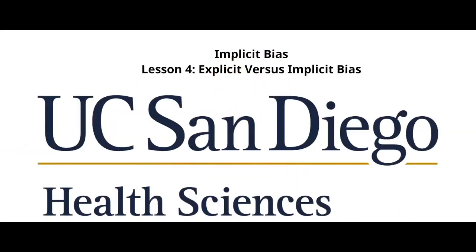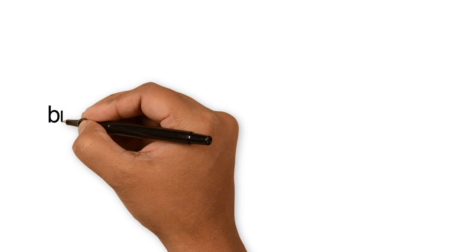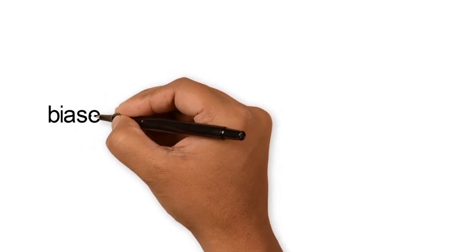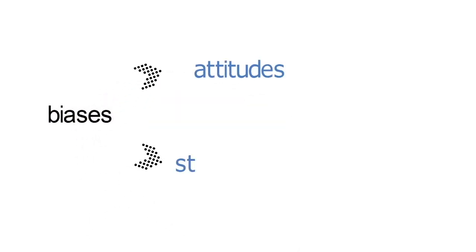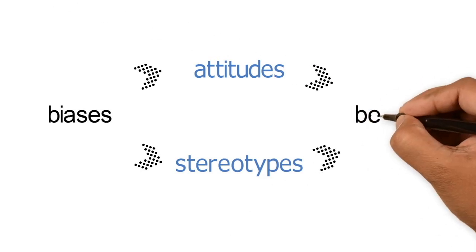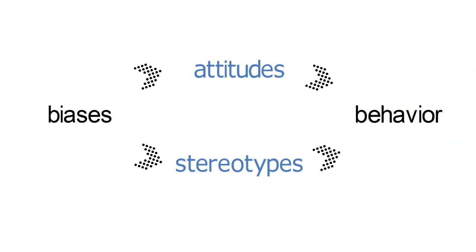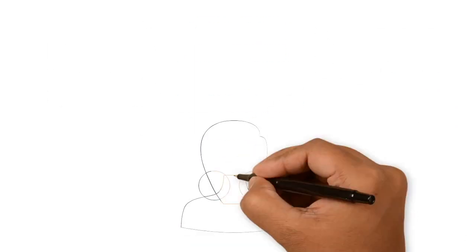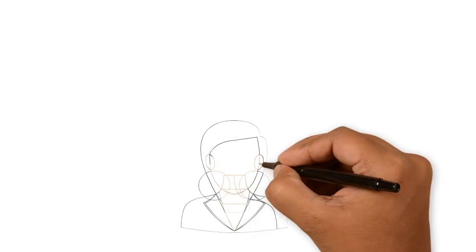In prior lessons, we learned that biases refer to attitudes and stereotypes that we hold towards most anything, including people. Most importantly, our biases can impact real-world behavior. So, if we want to promote a genuine tournament of merit, we'd probably want to check whether we have biases.